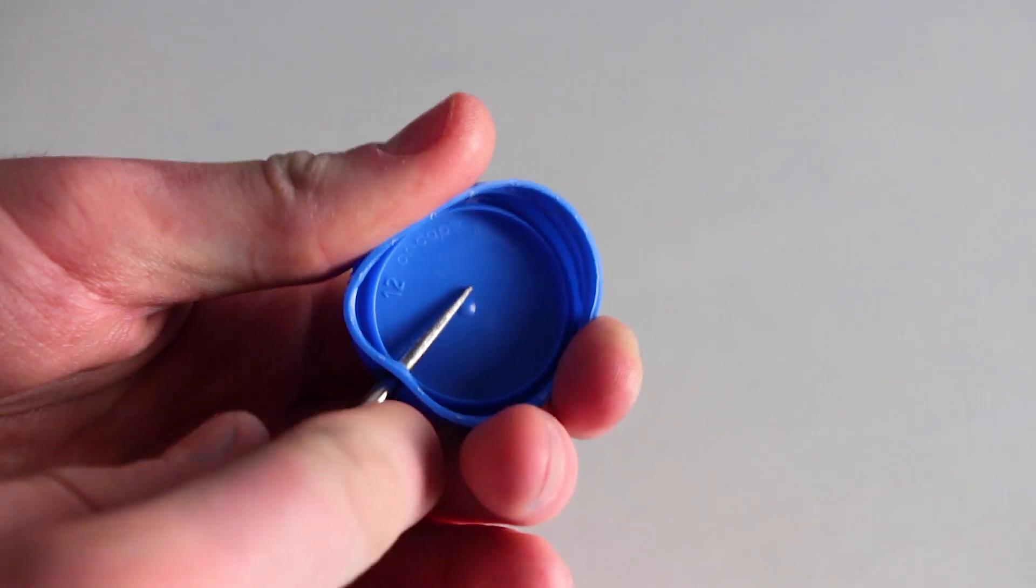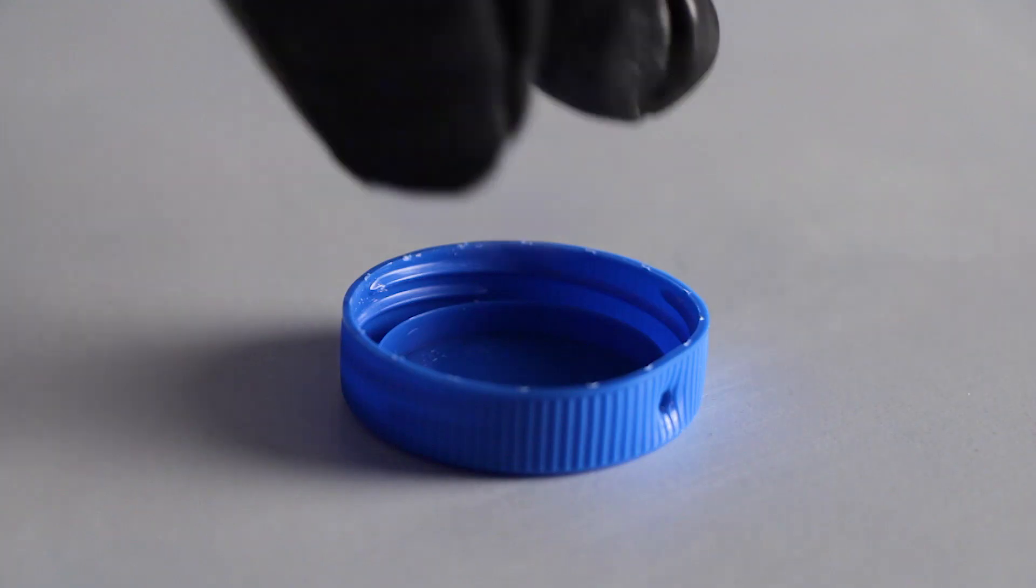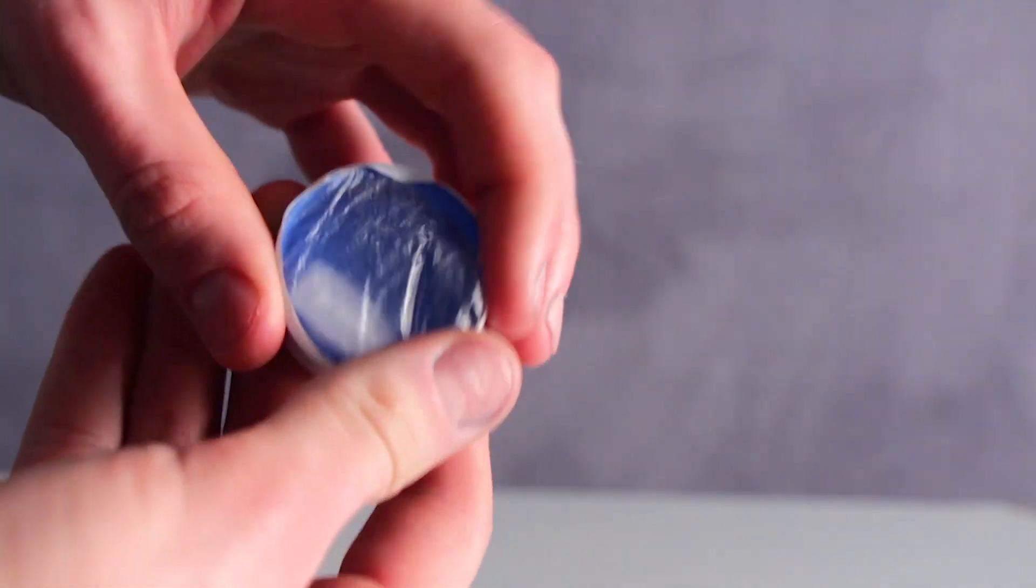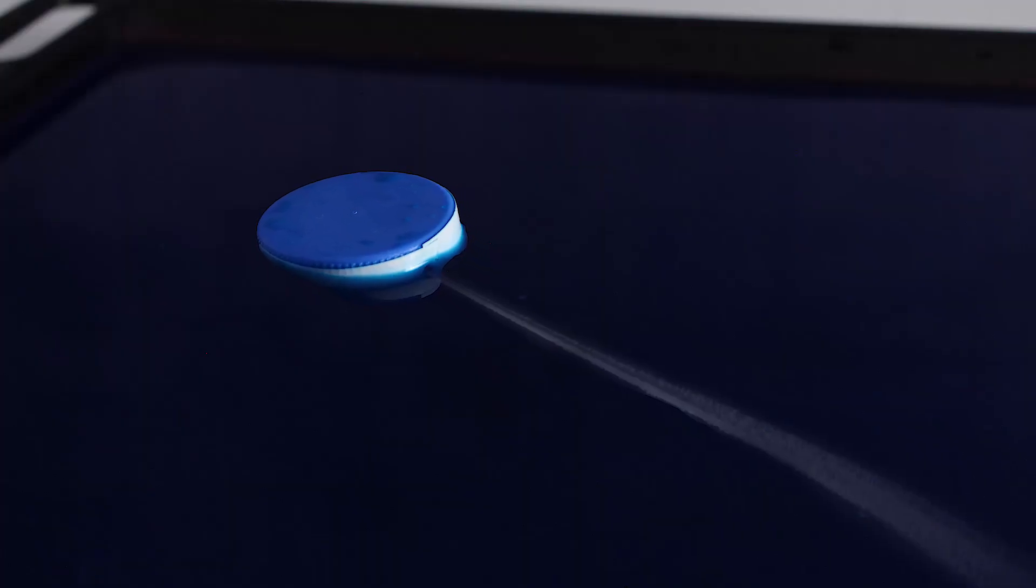Another option is to pierce a small hole in the side of a plastic bottle cap, place some dry ice along with a little bit of water, seal the bottom with cellophane, and place it in the water, watching it leave a brilliant white trail as it propels itself along.